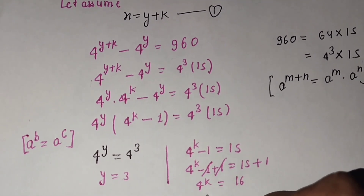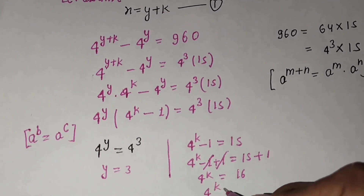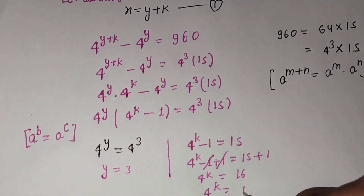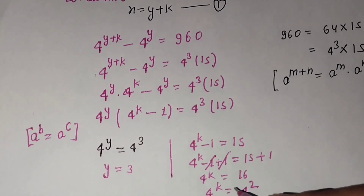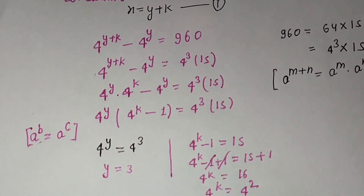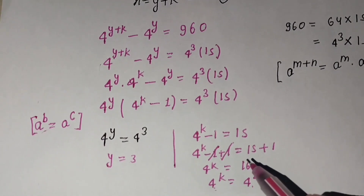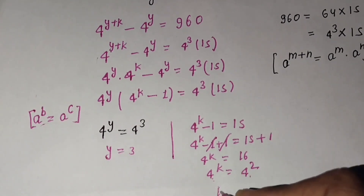We have 4^k equals 16. I can write 16 as 4 raised to power 2. Again using the same formula — since the left and right side bases are the same, the powers are equal — so k equals 2.